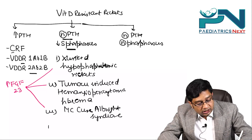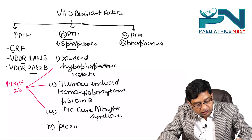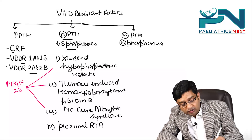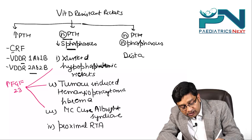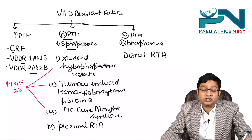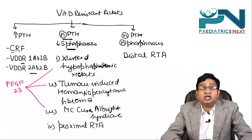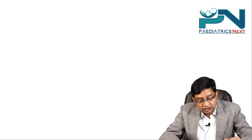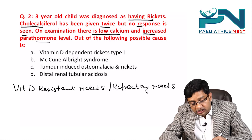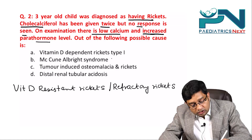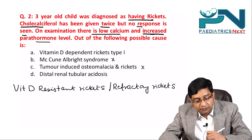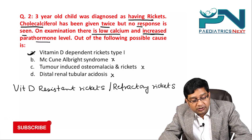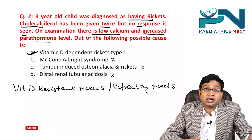The fourth cause is proximal renal tubular acidosis. Normal PTH with normal phosphorus is seen in distal renal tubular acidosis. Applying this classification to the question — low calcium and increased PTH is present. McCune-Albright has normal PTH, tumor-induced has normal PTH, and distal RTA has normal PTH. Therefore the answer is vitamin D dependent rickets type 1.